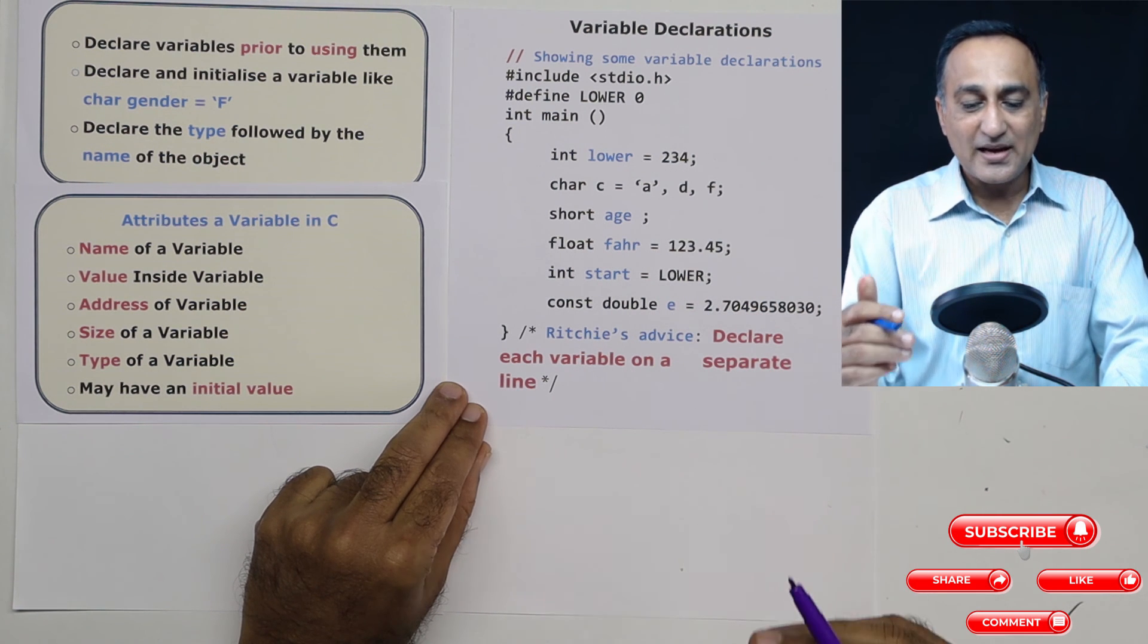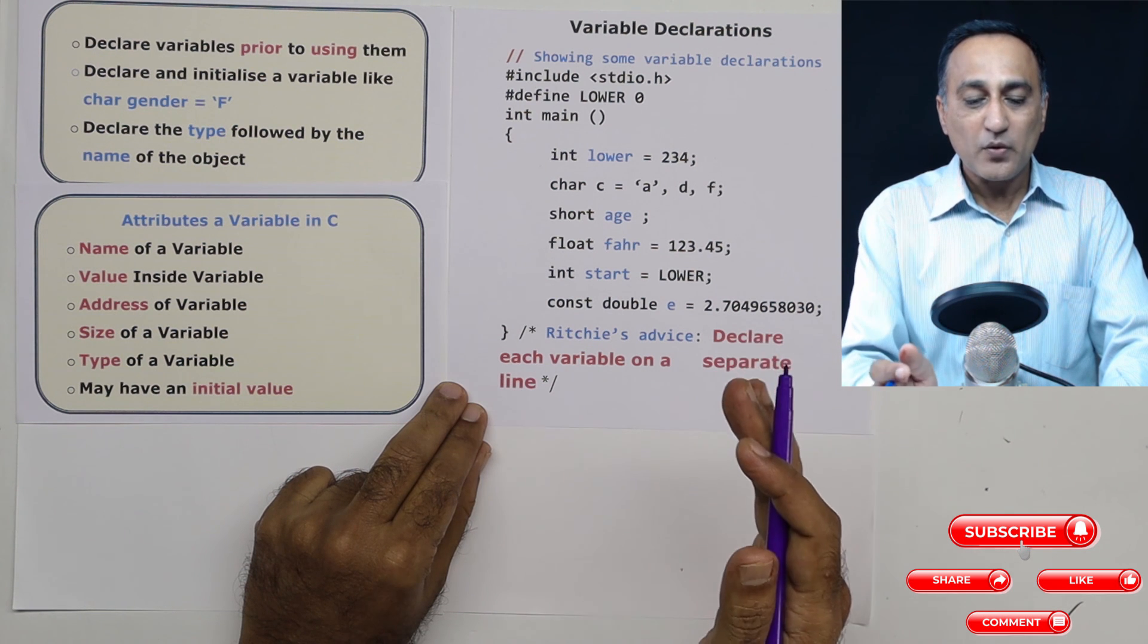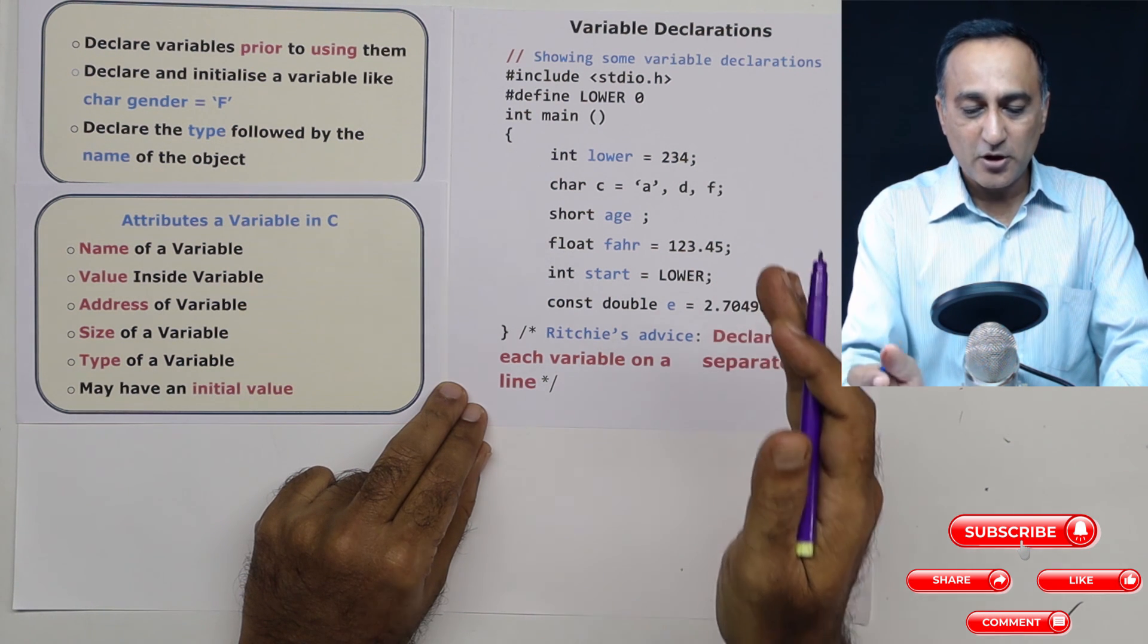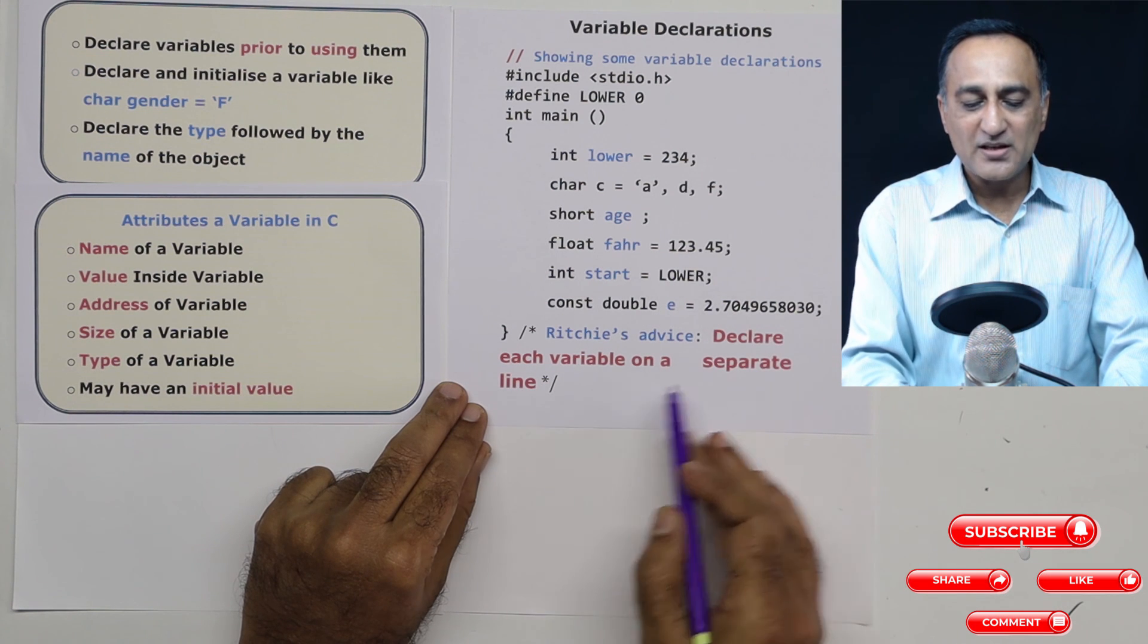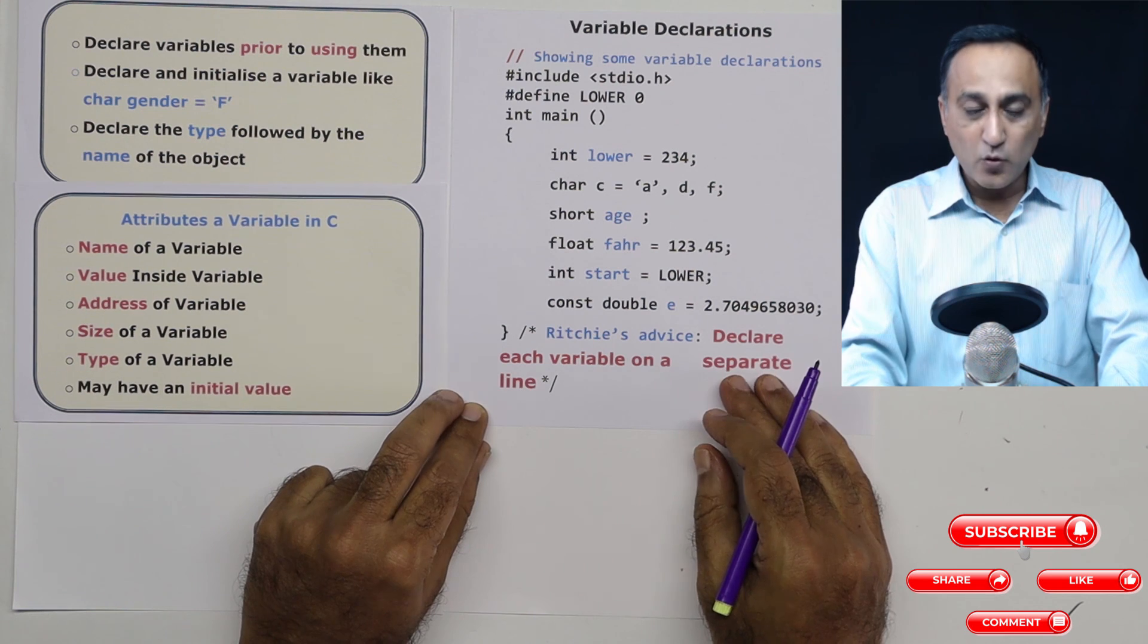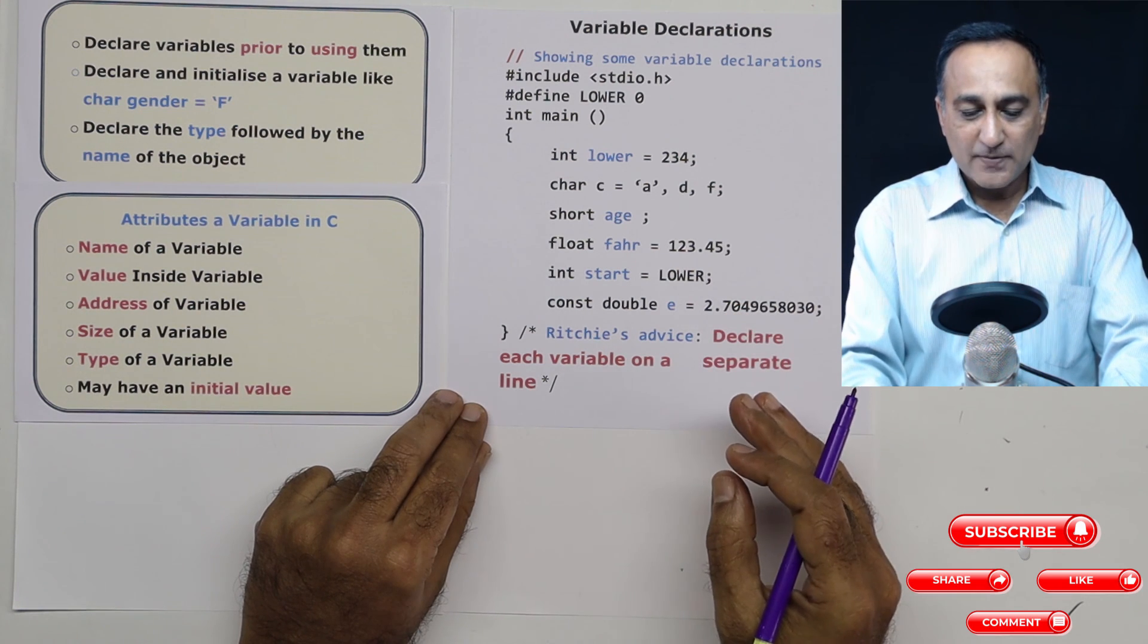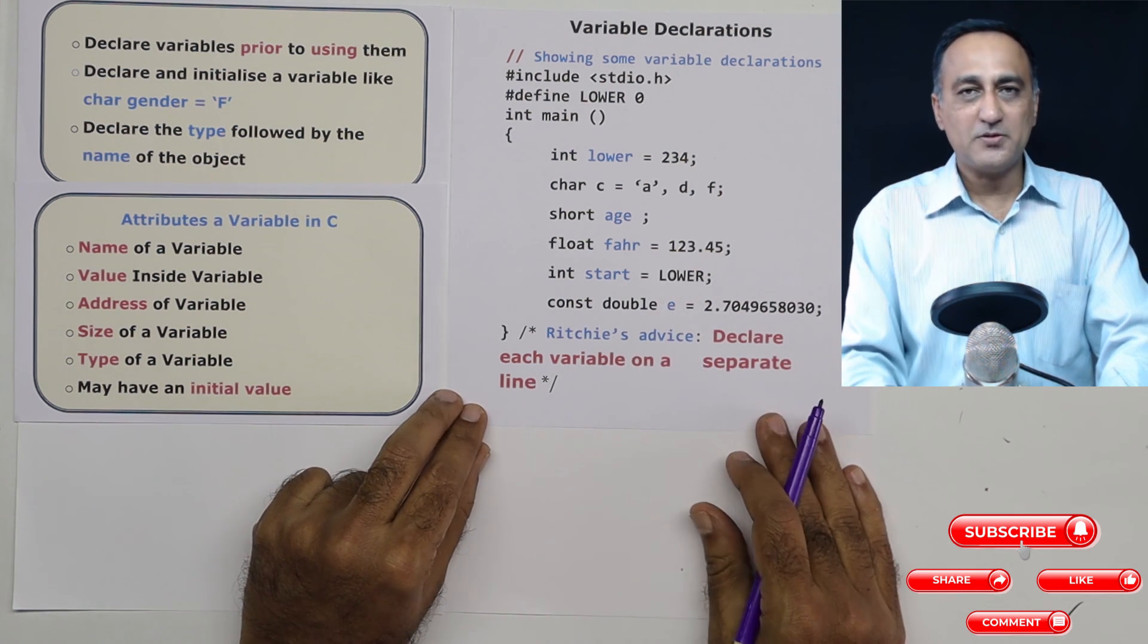If your program is highly readable through proper spacing and indentation, you will require very few or hardly any comments to explain the logic of your program. So please make an effort to declare one variable on a separate line. But just to give you a hint, I may not be able to follow my own advice because I am going to run out of space. So I may type more than one variable.